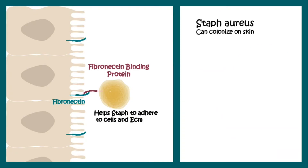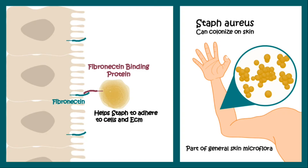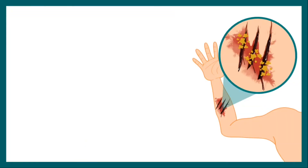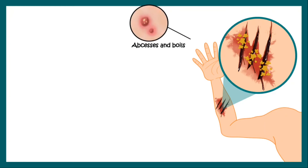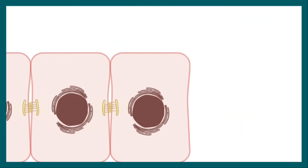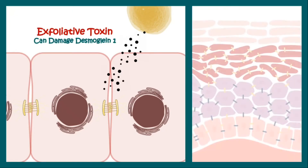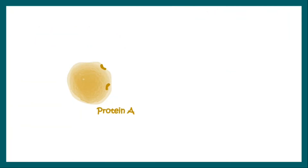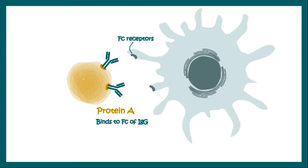Staphylococcus can colonize the skin and is present as normal skin microflora. But if the skin gets breached and Staphylococcus gets the chance to invade, it can cause a range of infections including abscess, impetigo, folliculitis, or cellulitis. In the skin, the Exfoliating toxin destroys the Desmoglein-1 cell adherence molecule and causes Scalded Skin Syndrome. Staphylococcus also has a surface protein known as Protein A, which binds to the Fc component of IgG, rendering the bacterium unfagocytable because the macrophage can no longer bind to it — this leads to an antiphagocytic effect.